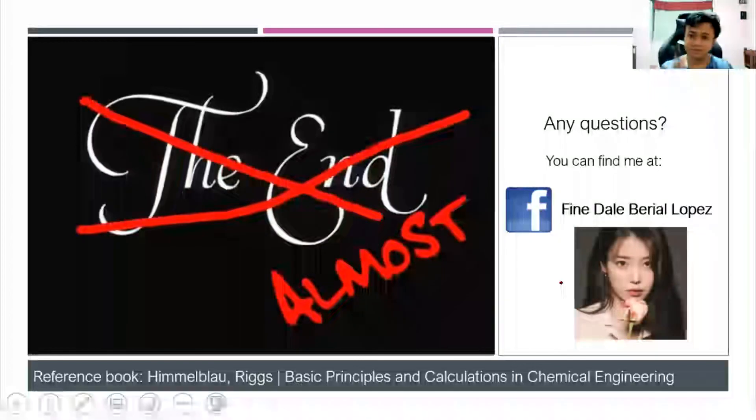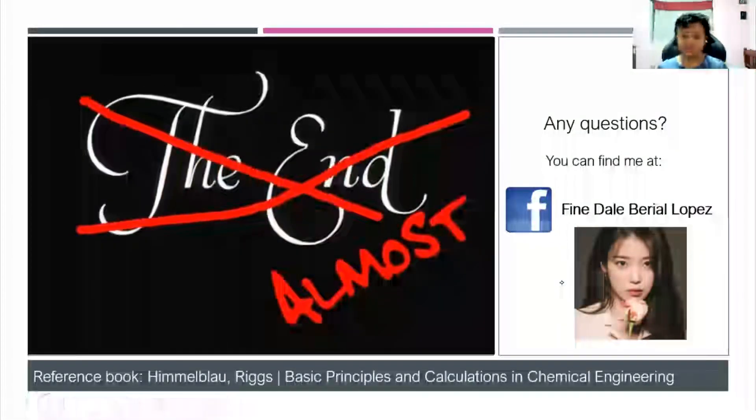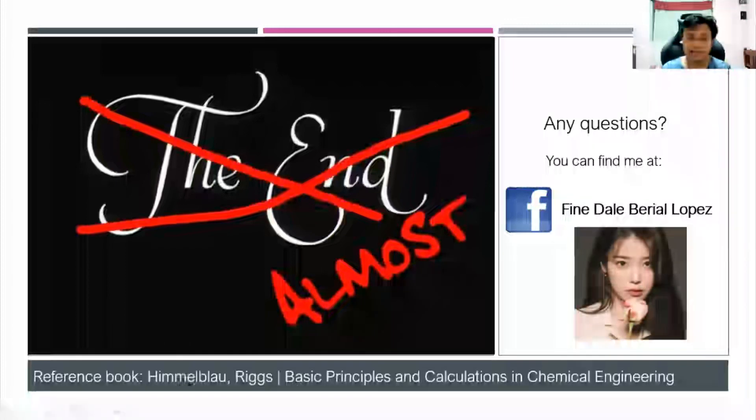That ends our first part of this lesson. If you have any questions, you can find me on my Facebook account. The reference book for this lesson is Himmelblau and Briggs, basic principles and calculations in chemical engineering.